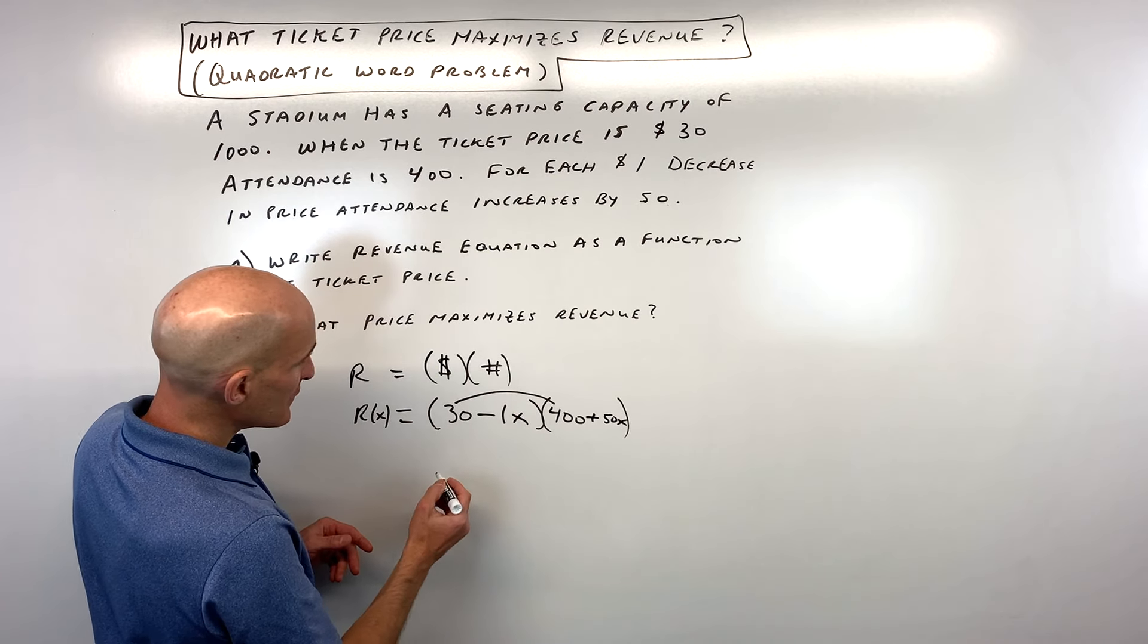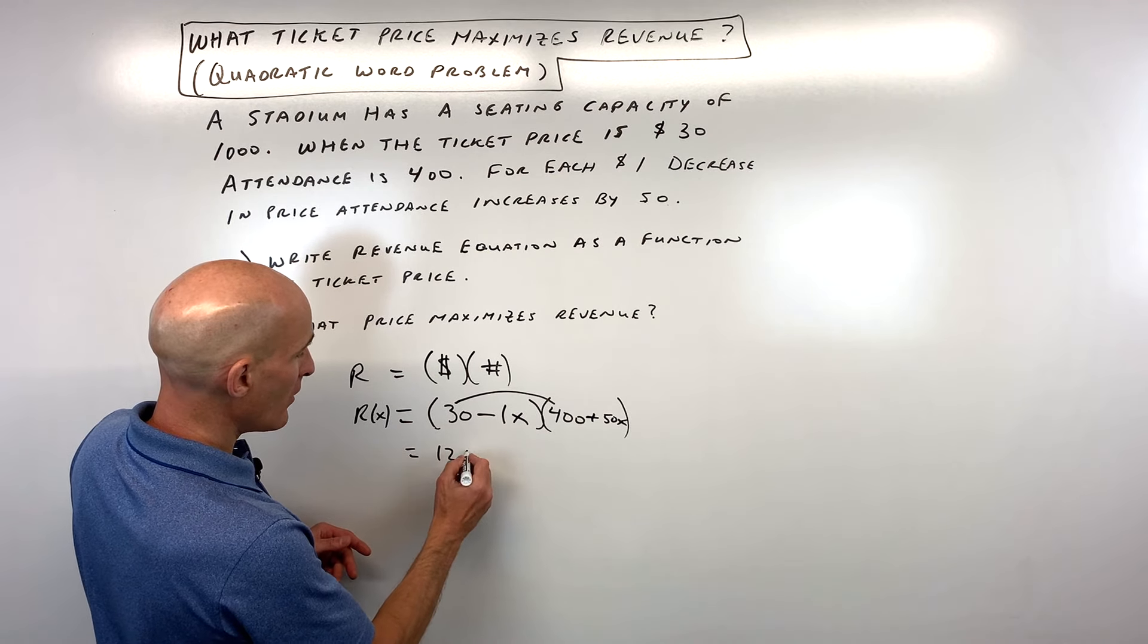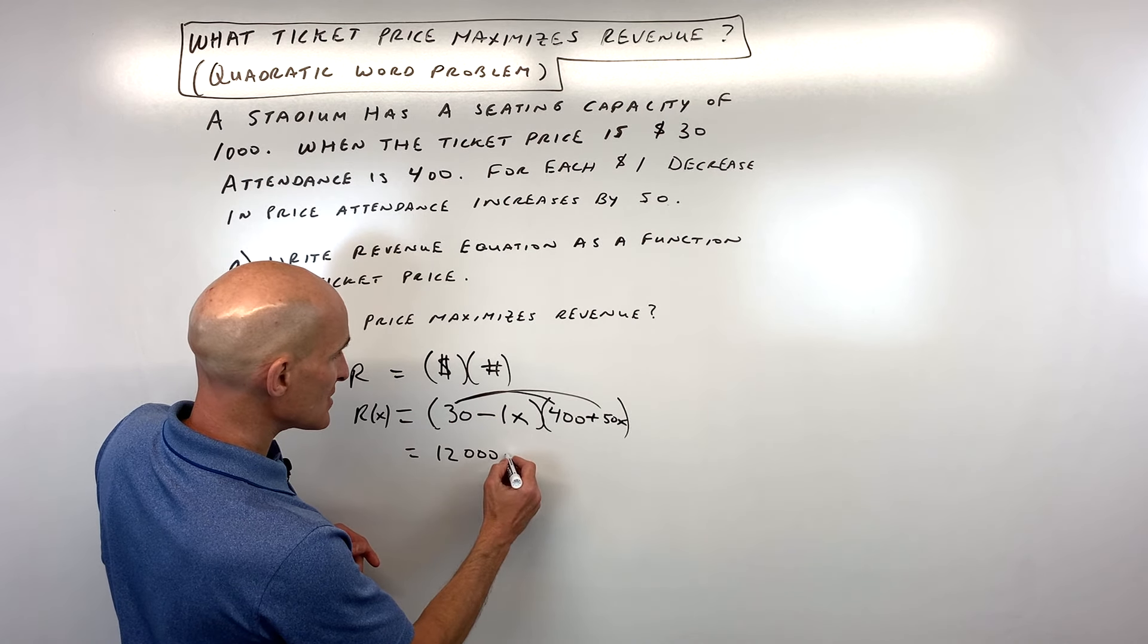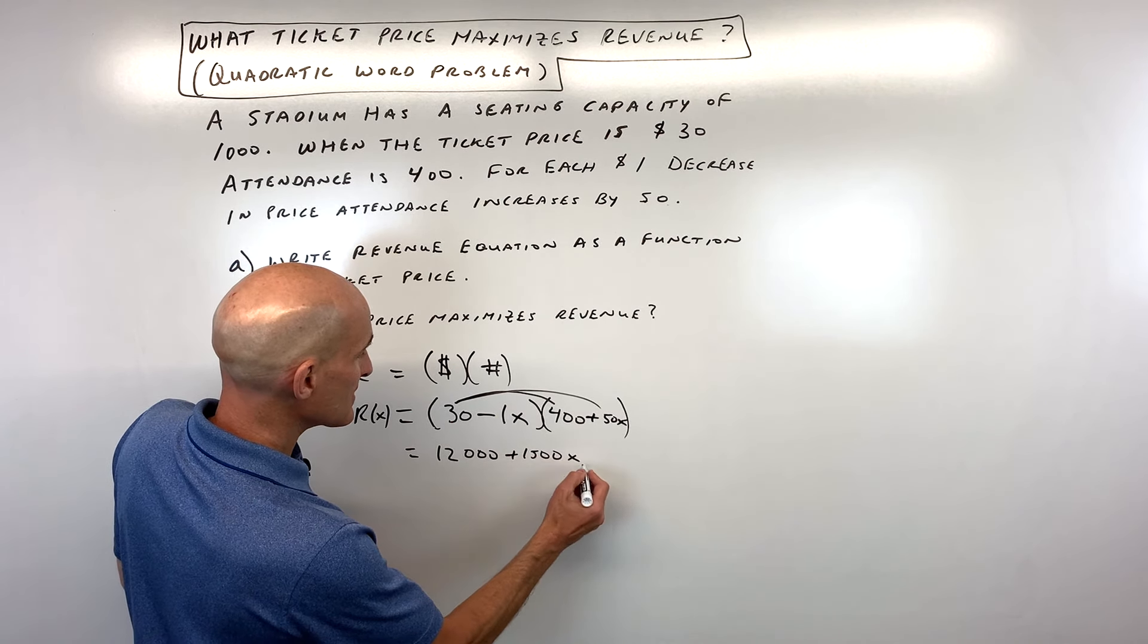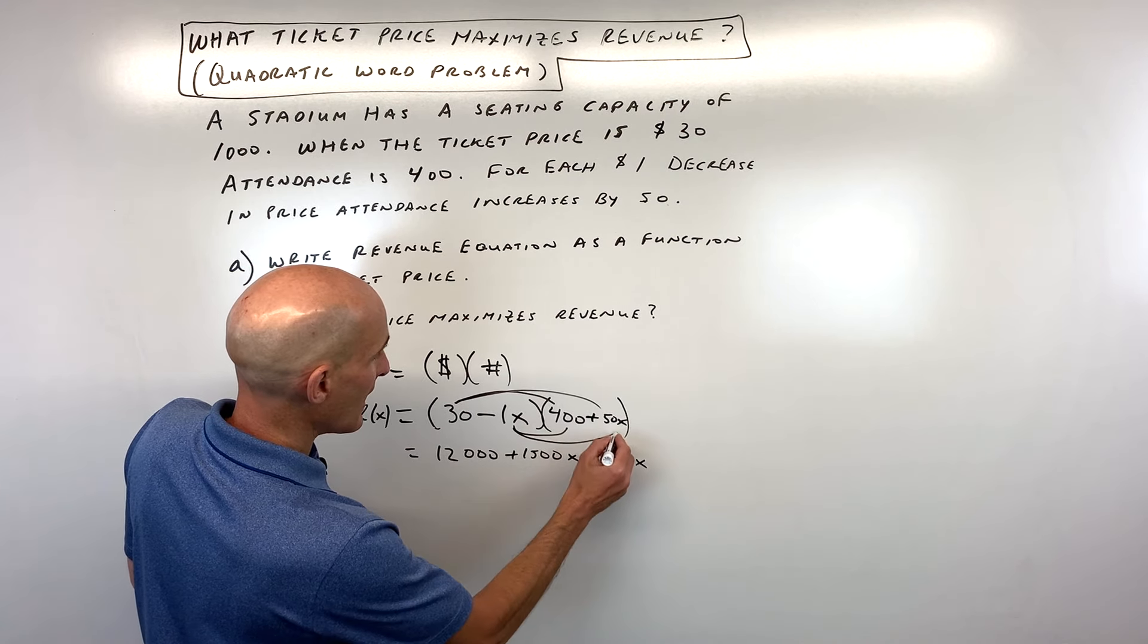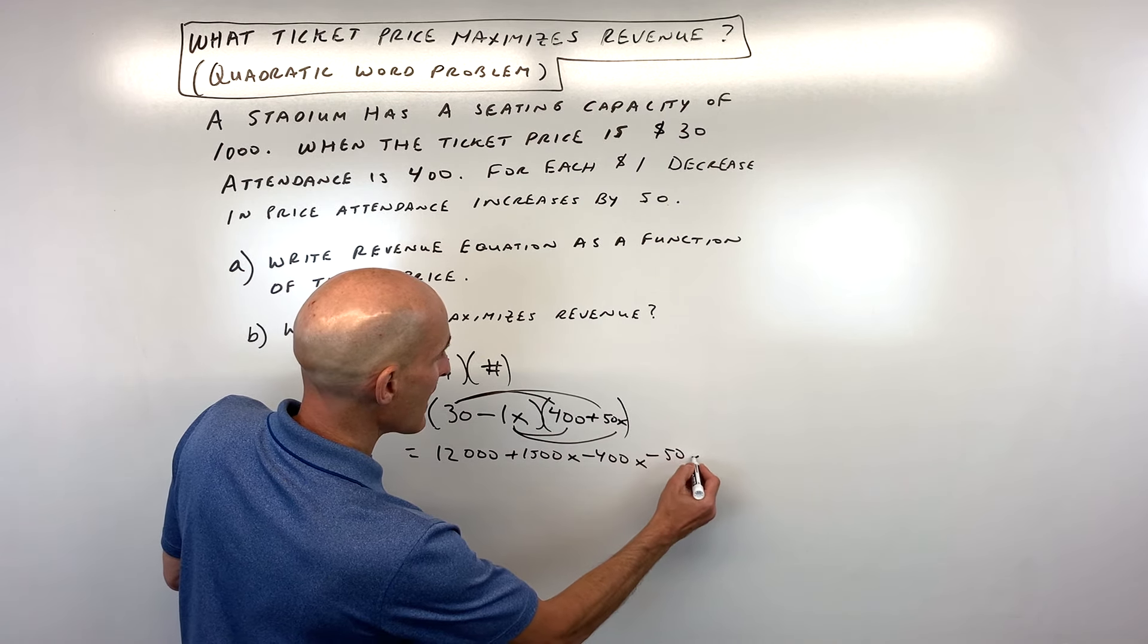So we have thirty times four hundred which is going to be twelve thousand. We have thirty times fifty which is fifteen hundred x. We have negative four hundred x. And we have negative fifty x squared.